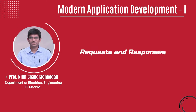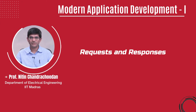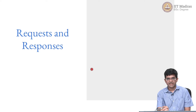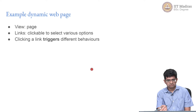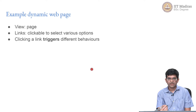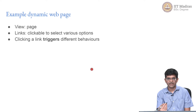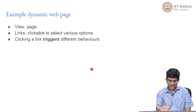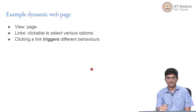Hello everyone and welcome to this course on Modern Application Development. To understand how MVC or models like that can be used in the context of a web application, we need to understand requests and responses. We can take the example of a dynamic web page. The view is essentially the page as presented to the user, and what you really have to interact with are clickable links. Clicking on each link will typically take you to a new page, or it might select certain options and modify the existing page in some ways.